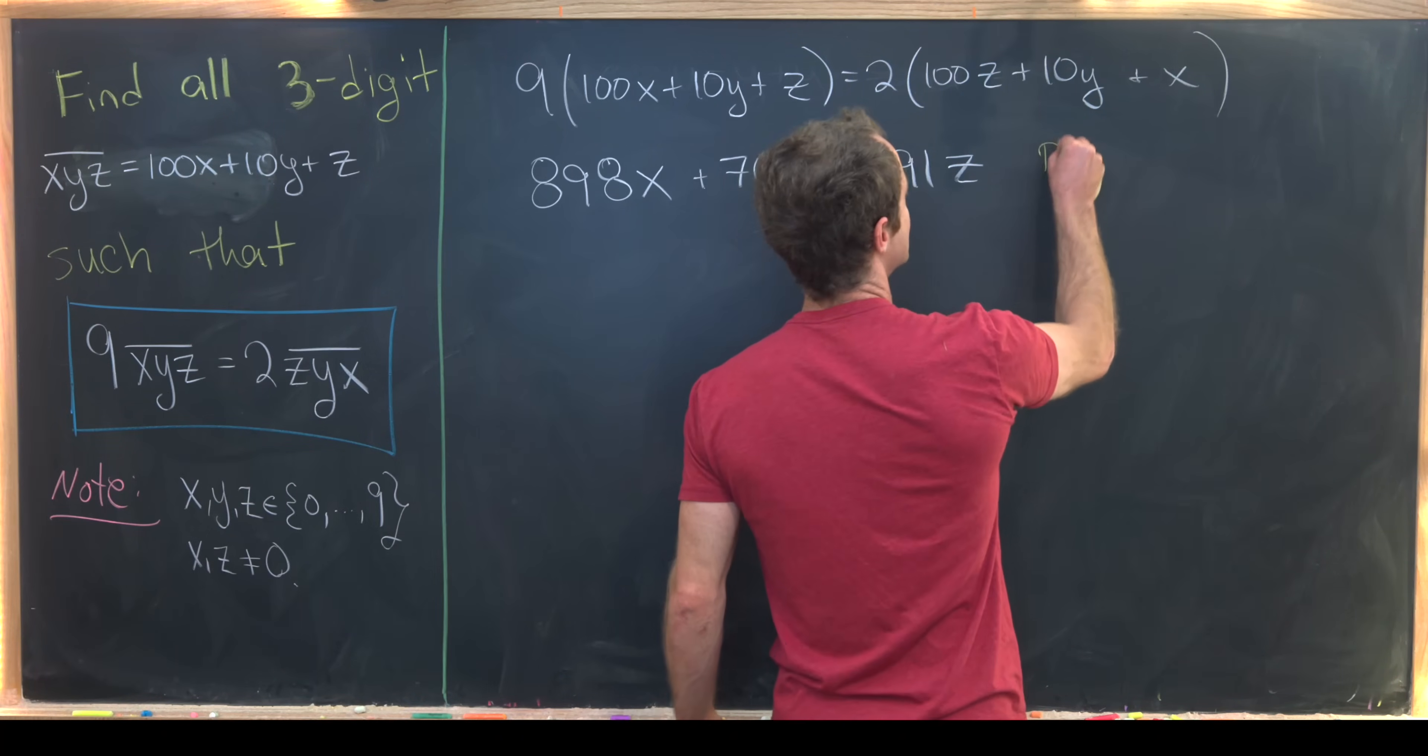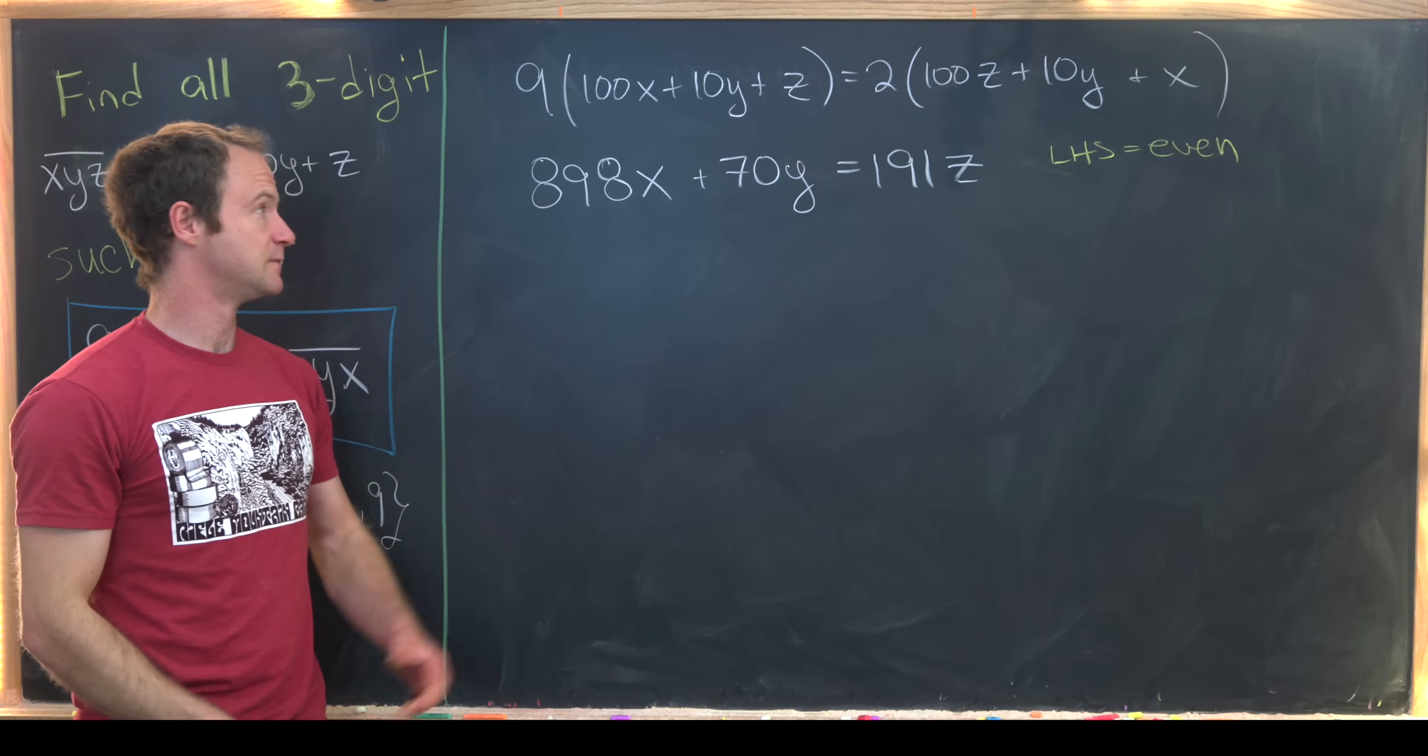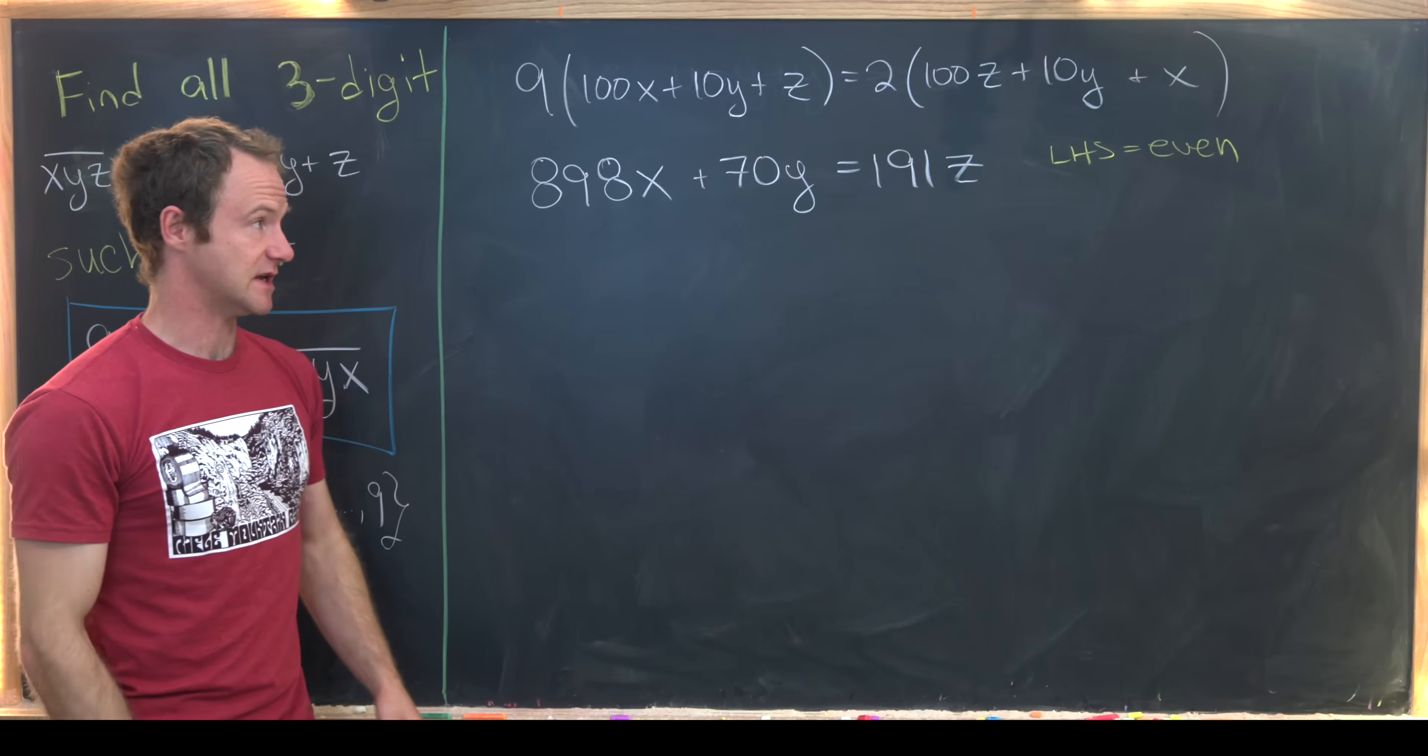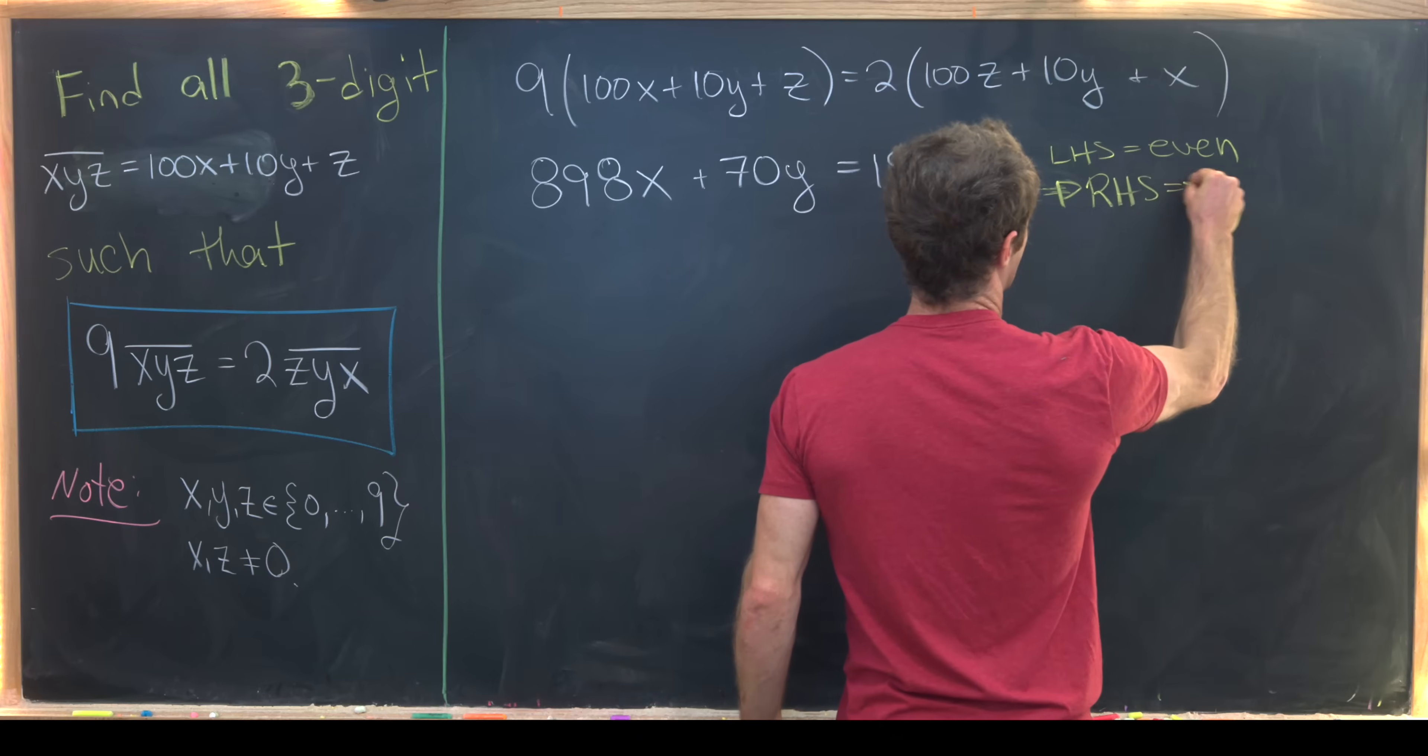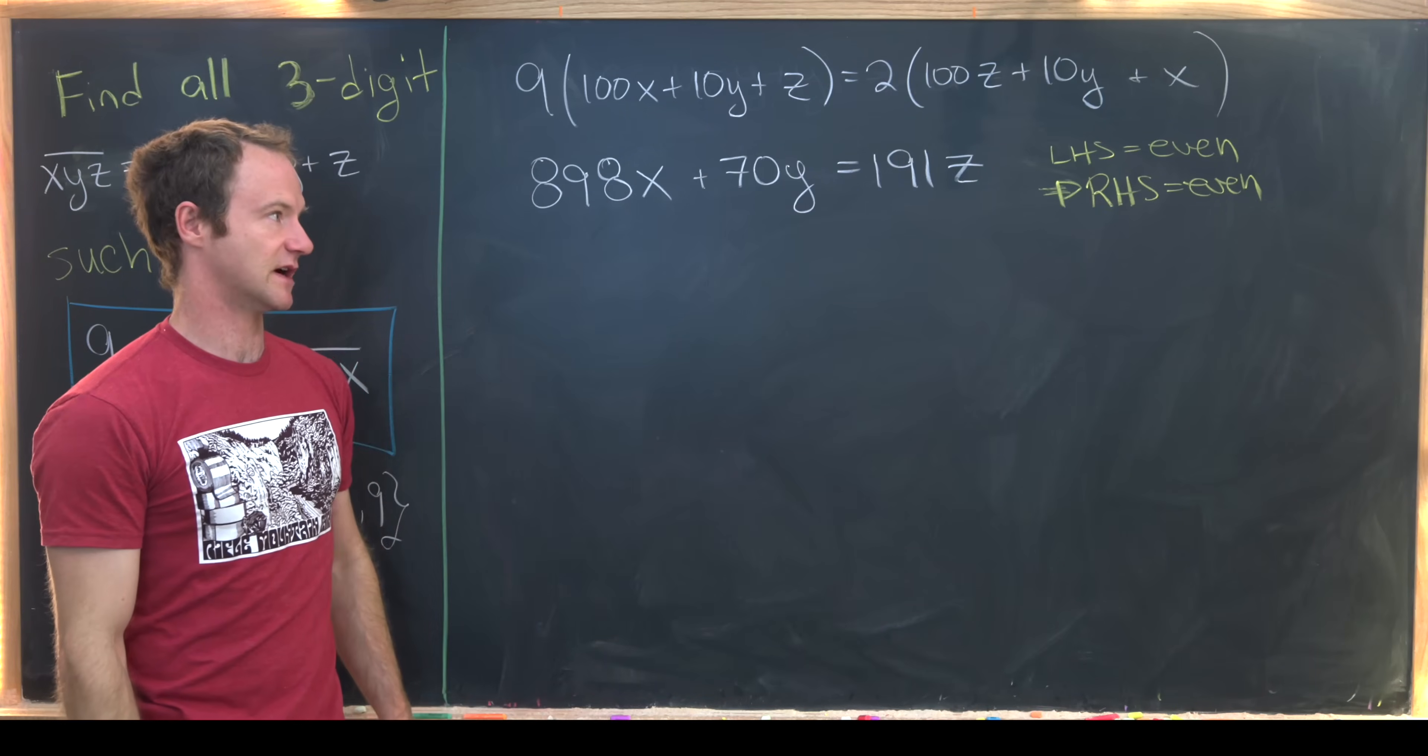And now I want to start using some fairly elementary arguments. So let's first notice that the left hand side of this equation is most definitely even. So 898 is an even number, so is 70. But that implies that the right hand side must also be even because the left hand side equals the right hand side.